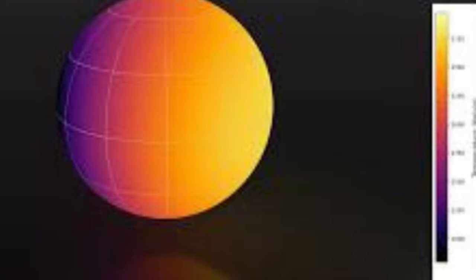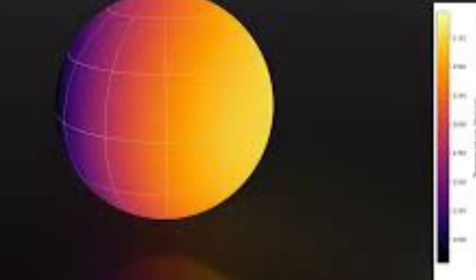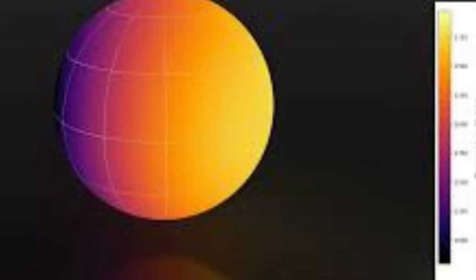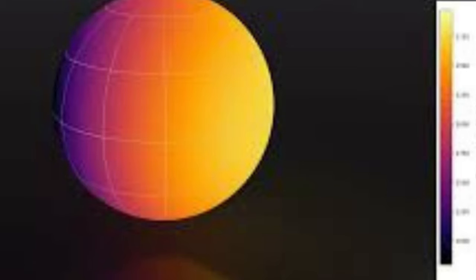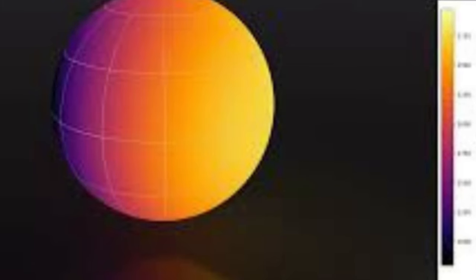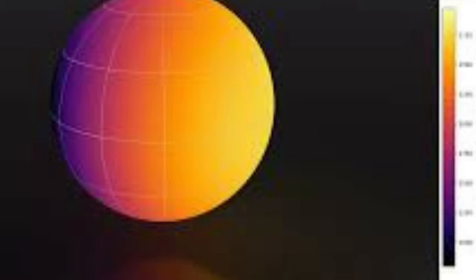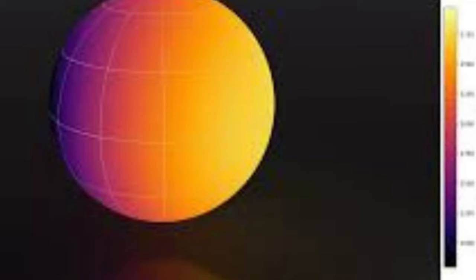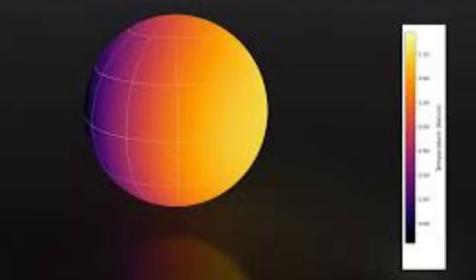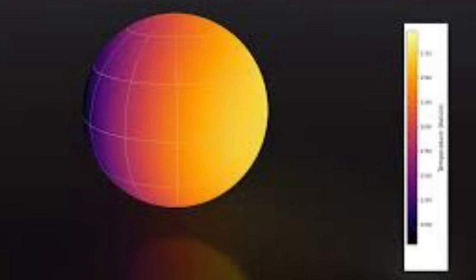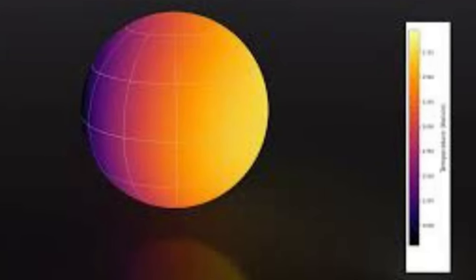On WASP-121b, even on the night side, temperatures are too hot for either the solid or liquid phases of water. Instead, on the day side, where temperatures exceed 3,000 Kelvin, loss of energy from the water molecules causes them to glow in infrared wavelengths. The temperature can cause them to even break down, splitting into hydrogen and oxygen.